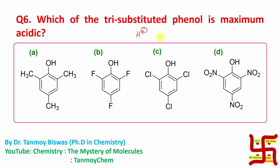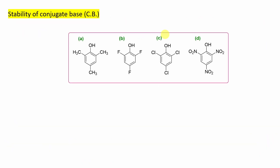And who can release a proton? Obviously, for them, the remaining anionic part is more stable. If the anionic part is more stable, then the proton release will be more facile, and the anionic part is called the conjugate base. So, stability of the conjugate base is actually responsible for acidity.